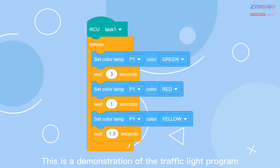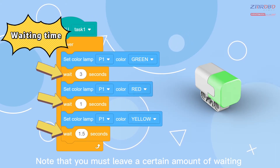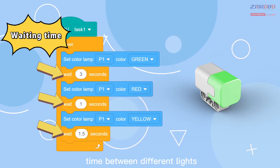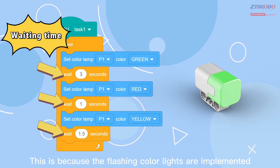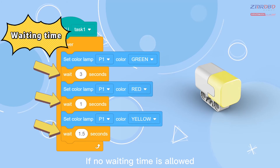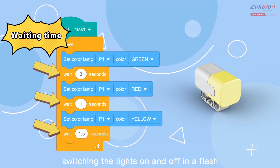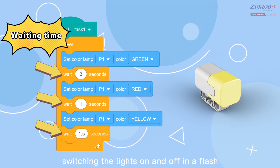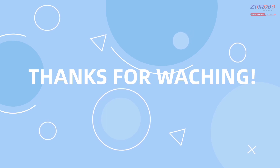Programming — this is a demonstration of the traffic light program. Note that you must leave a certain amount of waiting time between different lights, otherwise you will not see the light change. This is because the flashing color lights are implemented by turning them on and off quickly. If no waiting time is allowed, the controller will execute the program very quickly, switching the lights on and off in a flash. This is the introduction of the color light module. Thanks for watching.